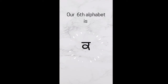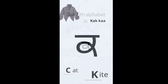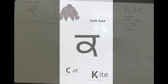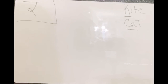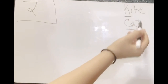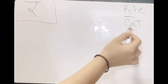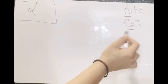Our sixth alphabet is kakka. Kakka kameez — kameez is shirt in English, and kakka makes the sound of k, just like k in kite and the k sound of c in cat.